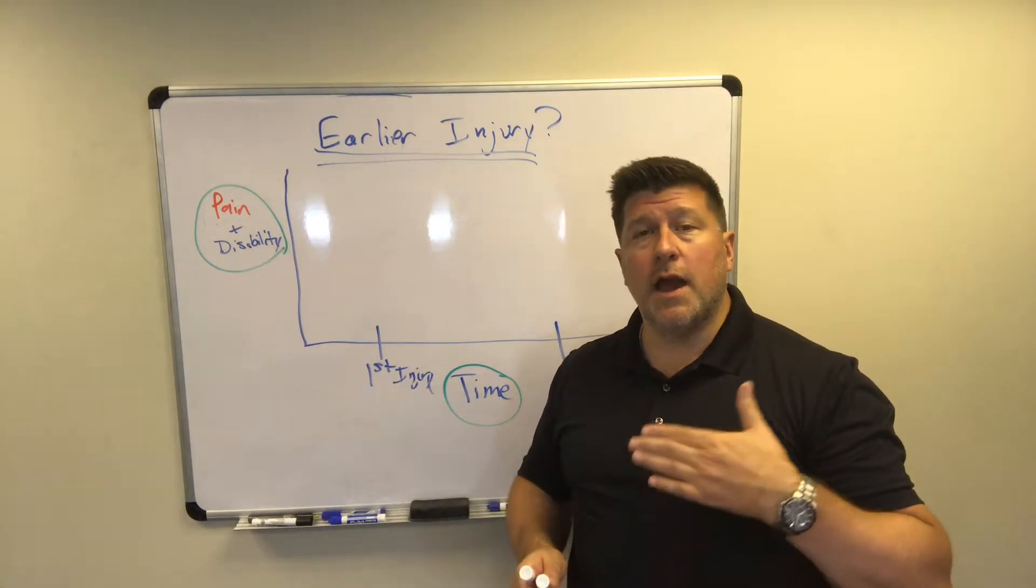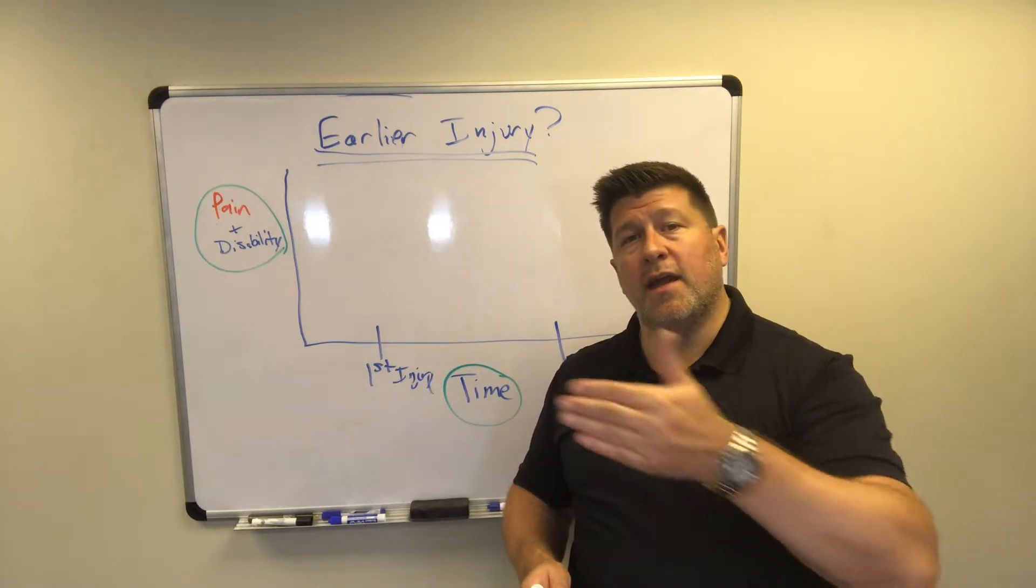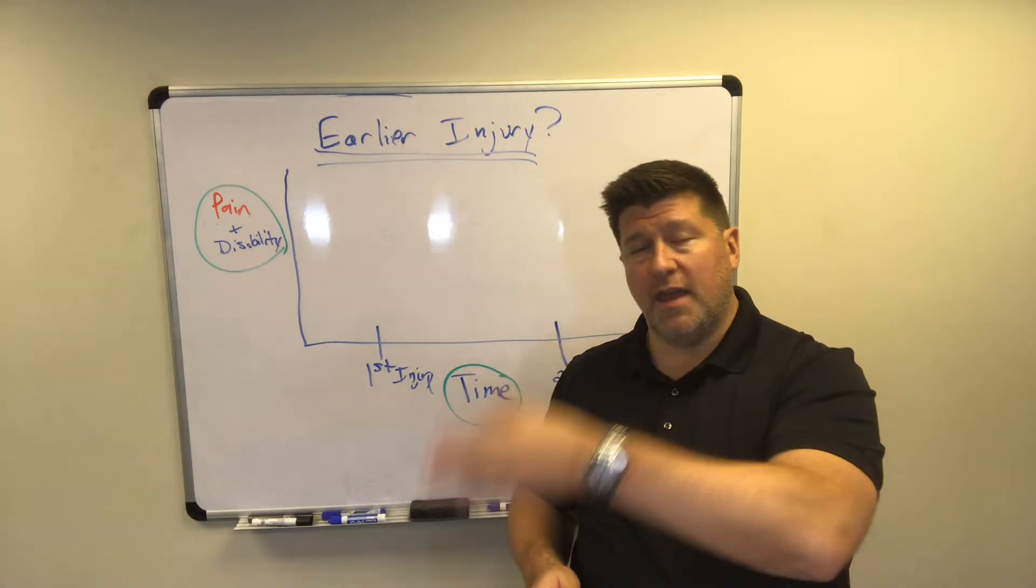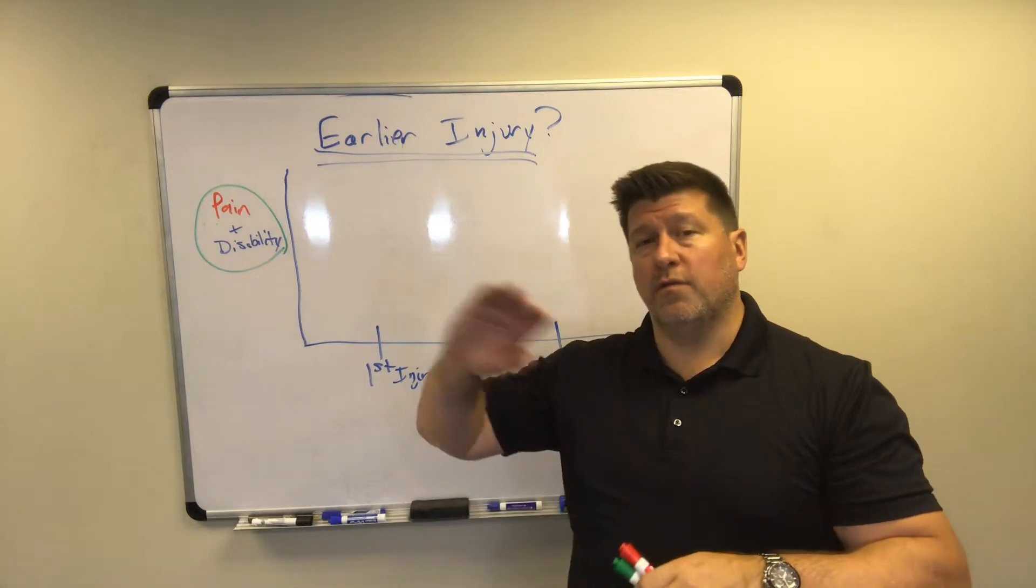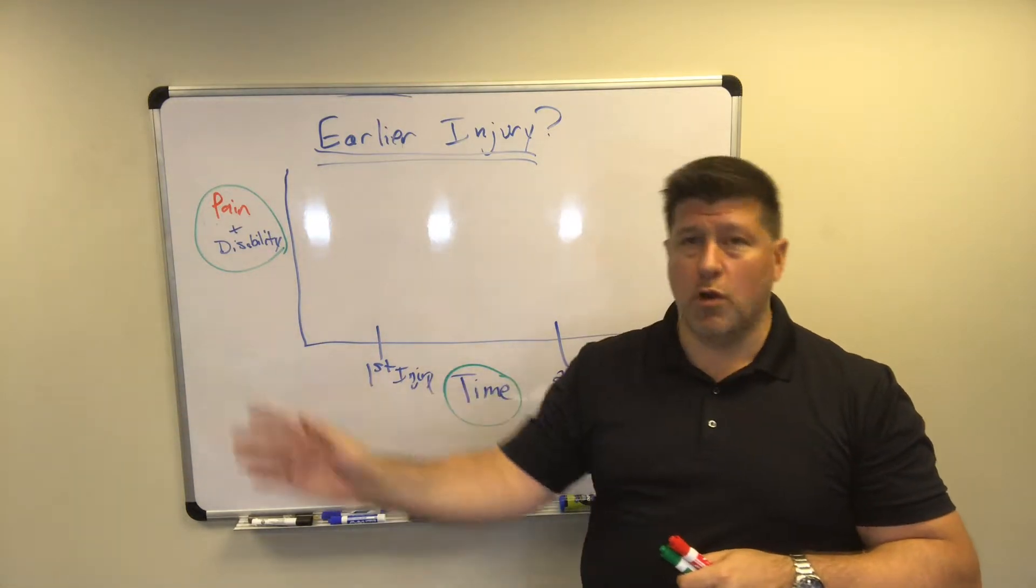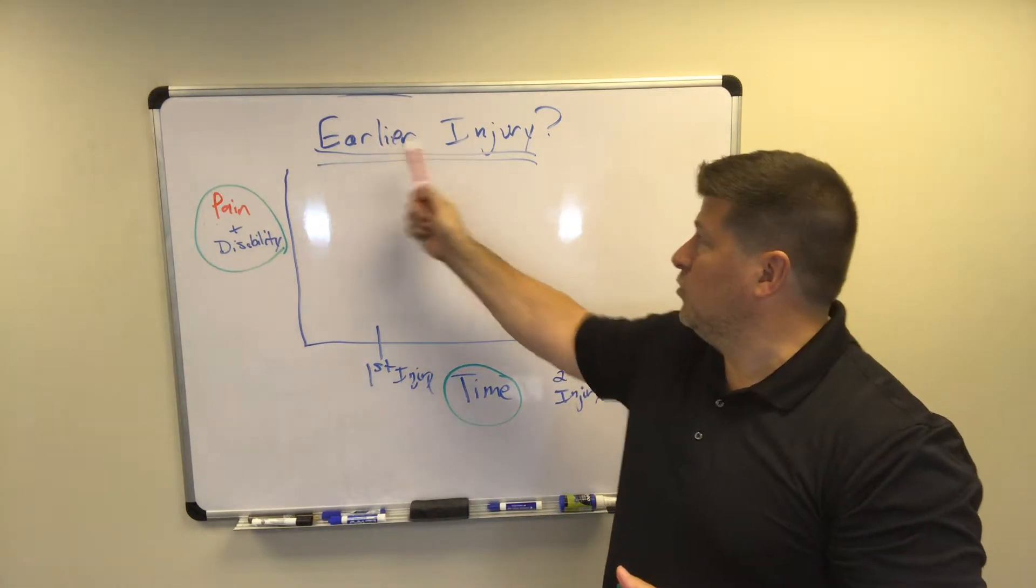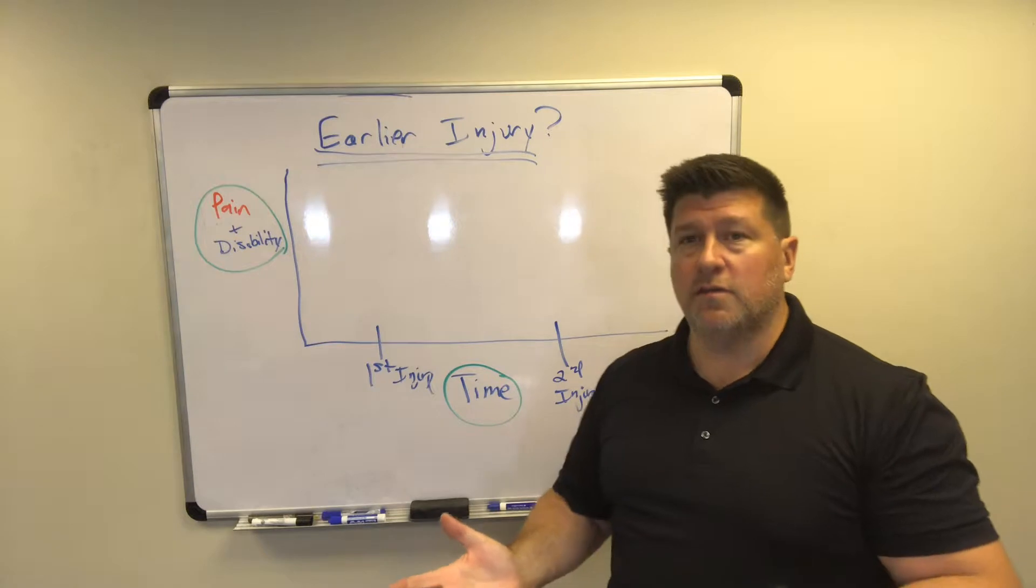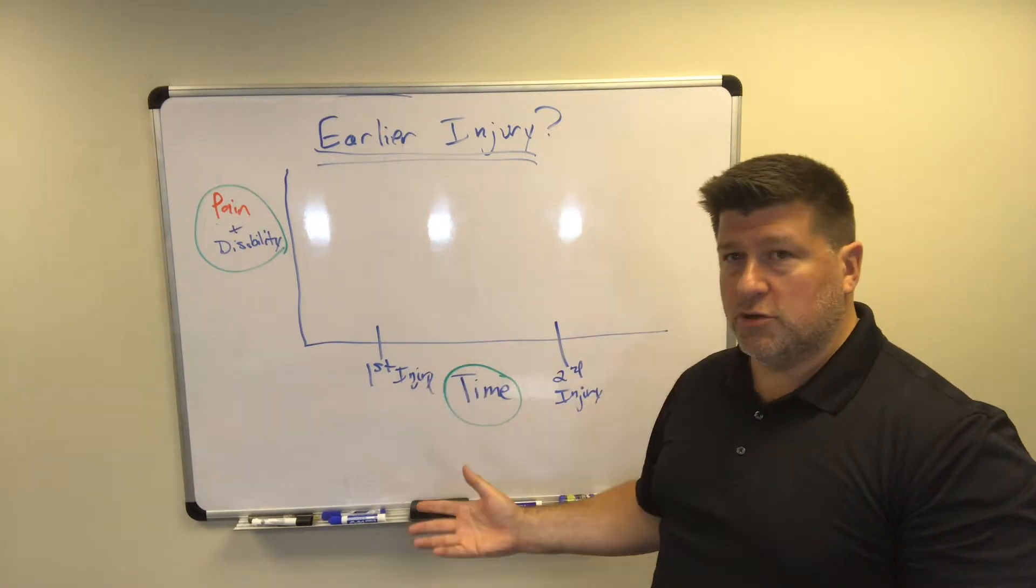They're worried because they hurt their back in the accident but they have a prior accident from like 10 years ago and they still had problems with their back from that accident going into today. So the topic today is what if you have an earlier injury, and I think the easiest way for me to do it is to just explain it on the board with this little chart.